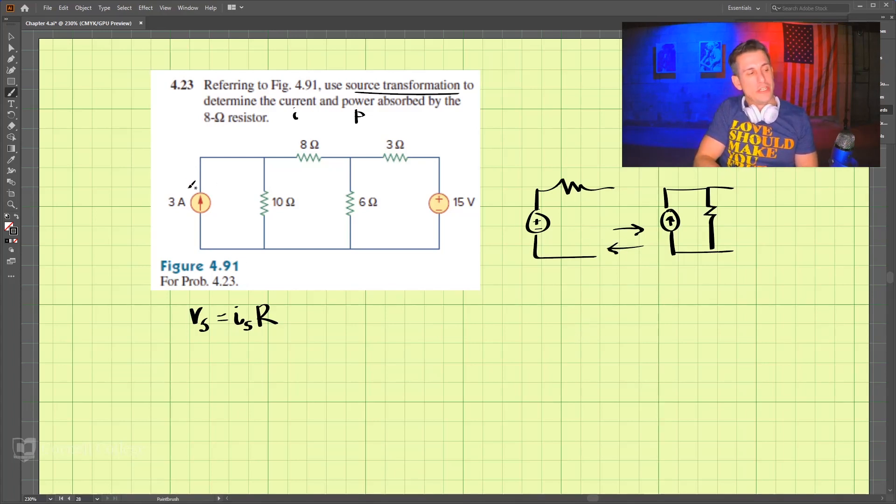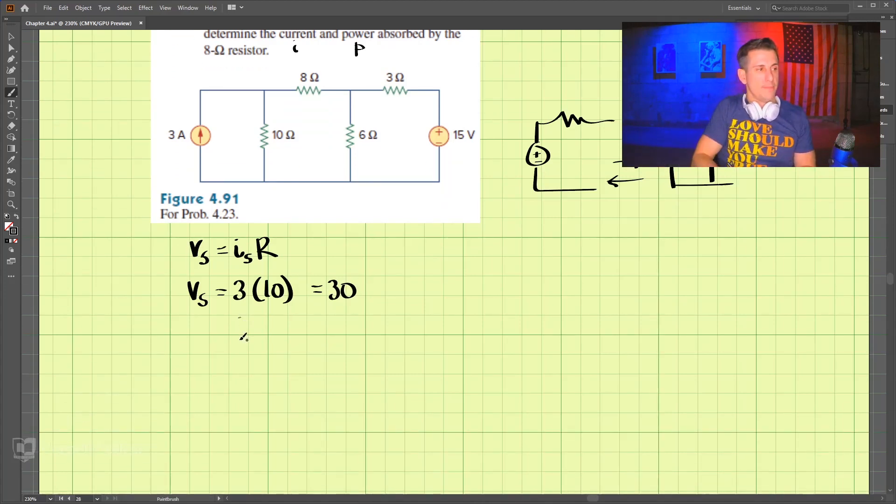Taking the 3-amp current source and the 10-ohm resistor here, we have the voltage source equals the current source times the resistance, which is 10. So the voltage source is then equal to 30. Let's redraw this circuit. We have a 30-volt voltage source, and then that's in series with this.